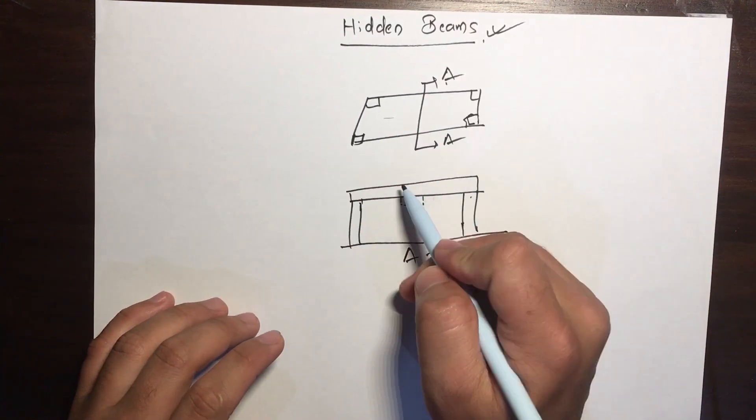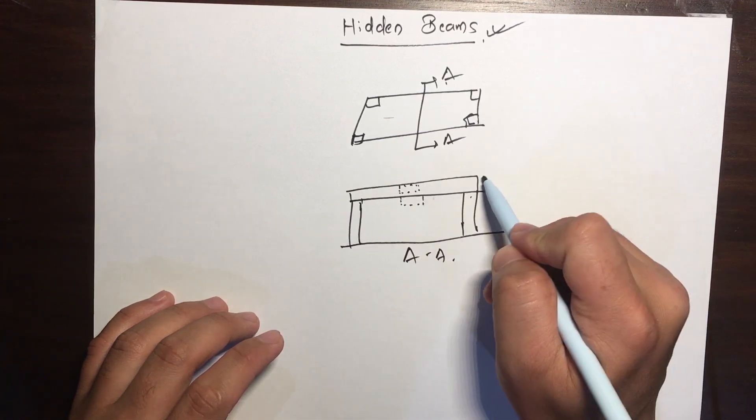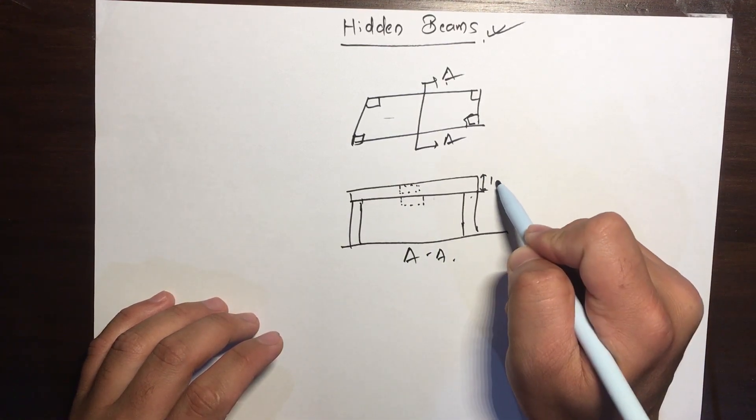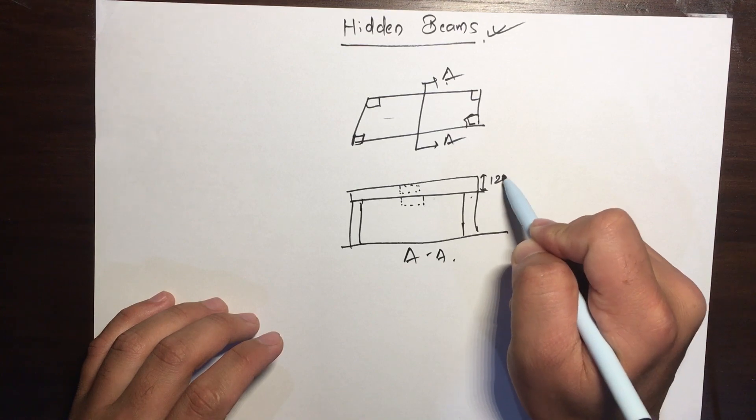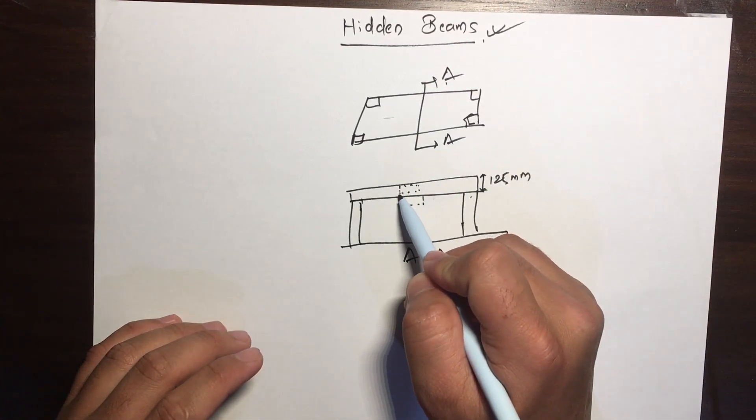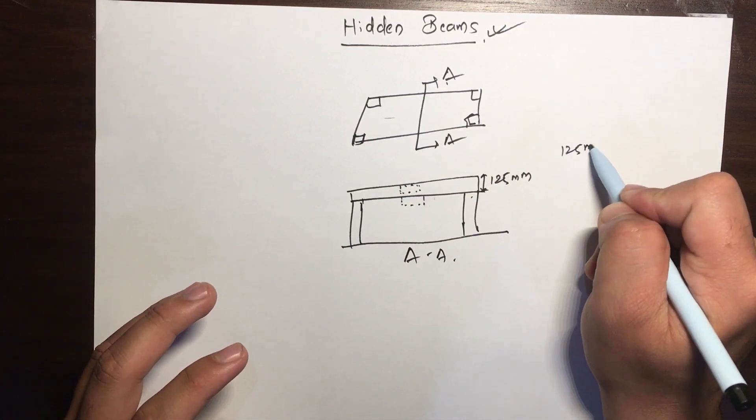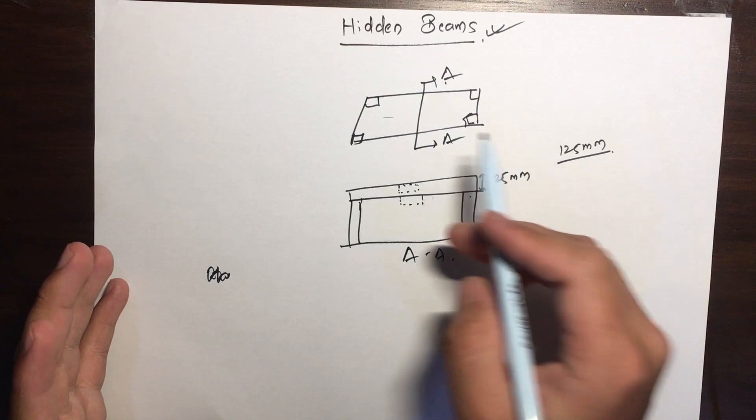If the thickness of this slab is, let's take 125mm, or 140 or 160mm, then the depth of this beam is also 125mm. This kind of beam that is hidden inside the slab is called a hidden beam.